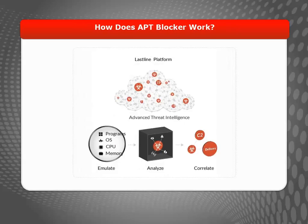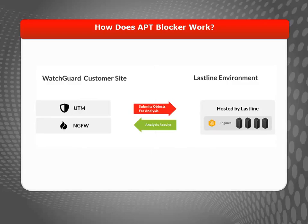How does APT Blocker detect advanced malware? WatchGuard works closely with our best-of-breed strategic partner, Lastline, to use advanced full-system emulation analysis to identify APT malware before it can harm your network. Unlike other traditional scanners, APT Blocker doesn't rely on signatures to prevent malware. Instead, APT Blocker scans files that are destined for your network and generates an MD5 hash of the file. This hash file is then submitted to the Lastline cloud-based data center.